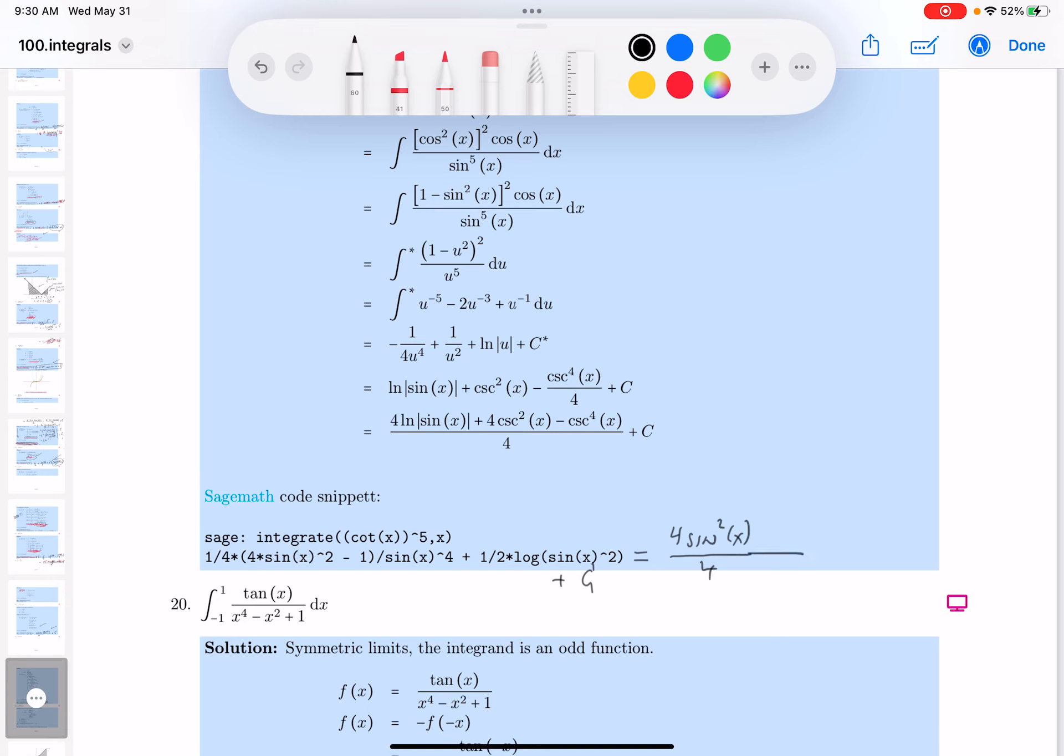Let's see. I gotta be careful here. I'm seeing one quarter, four sine squared, and minus one. It's not so bad. They're dividing it by sine four. Put this over here.